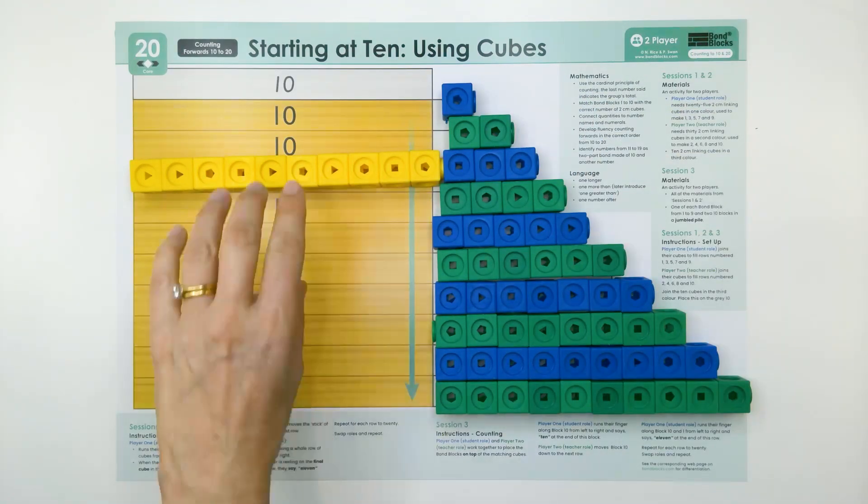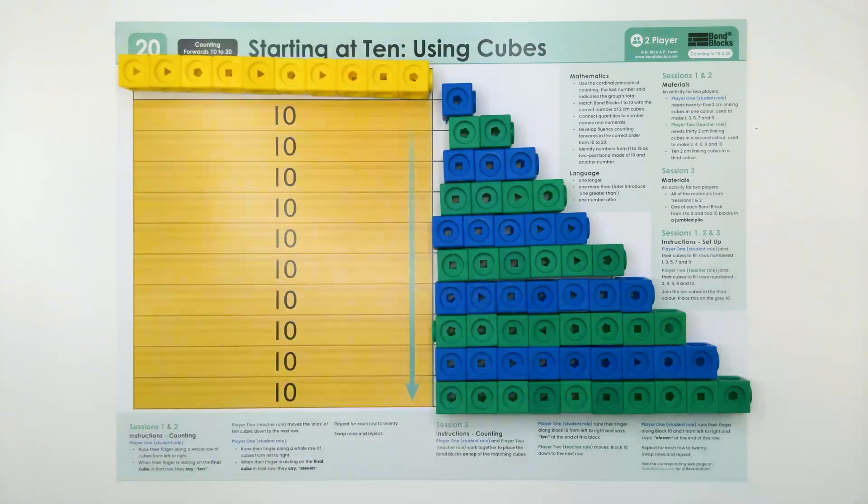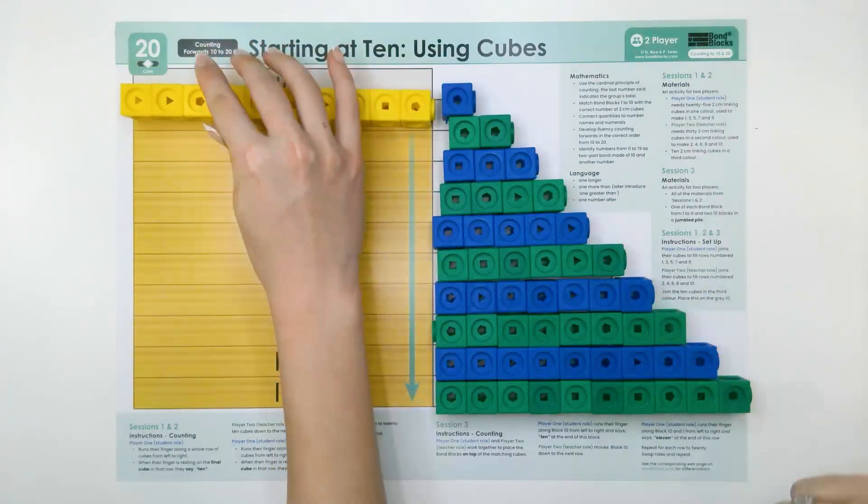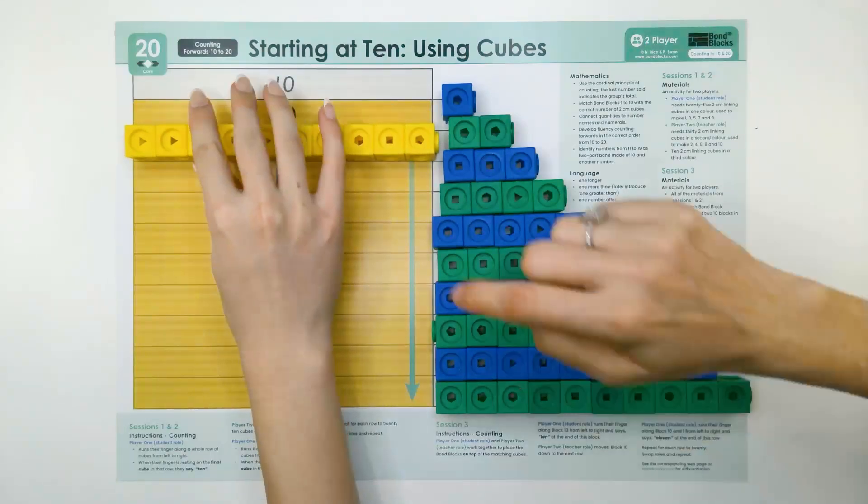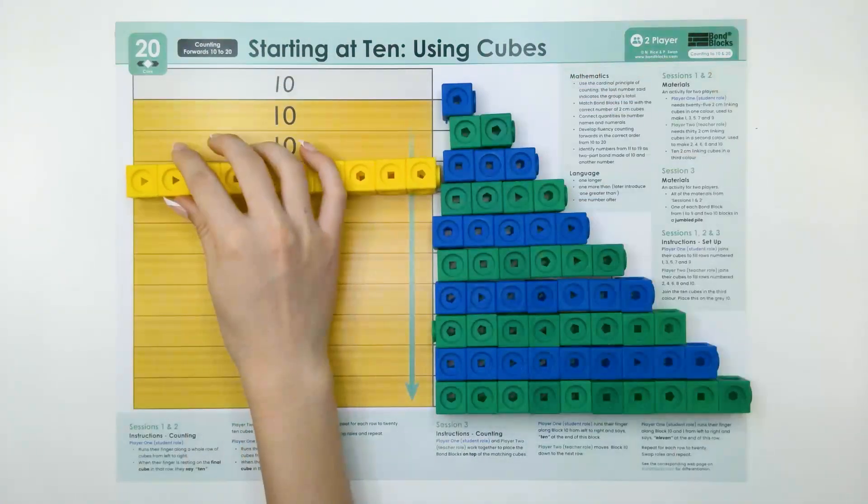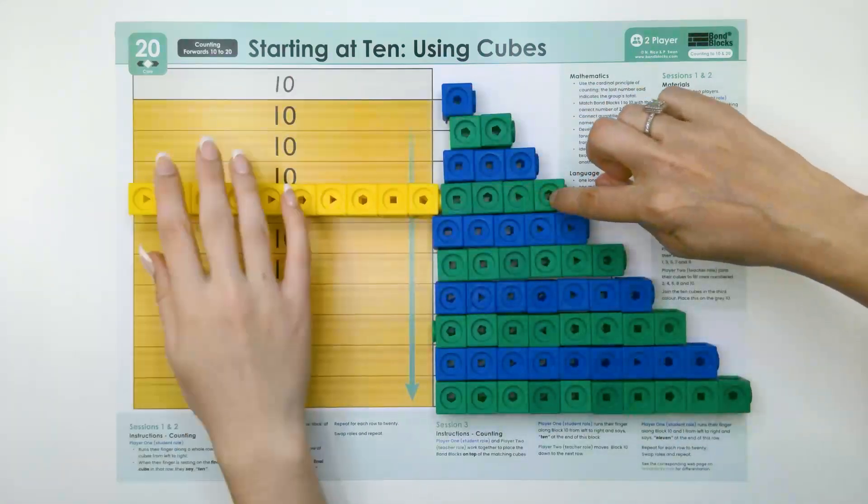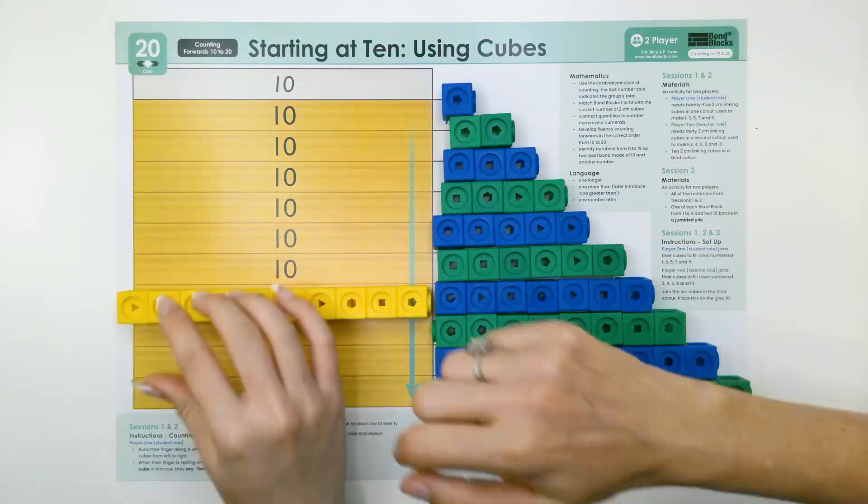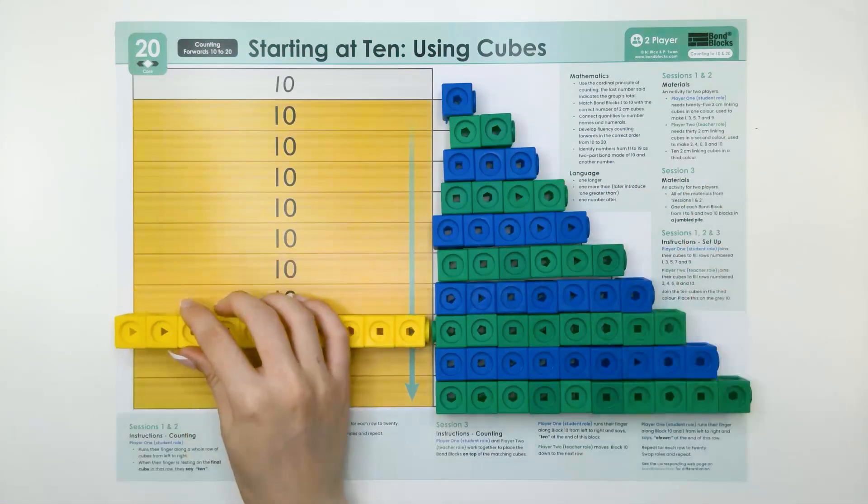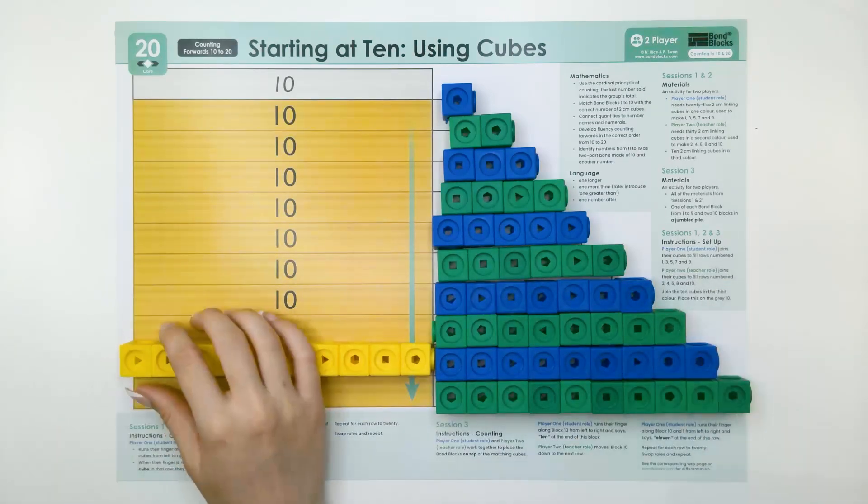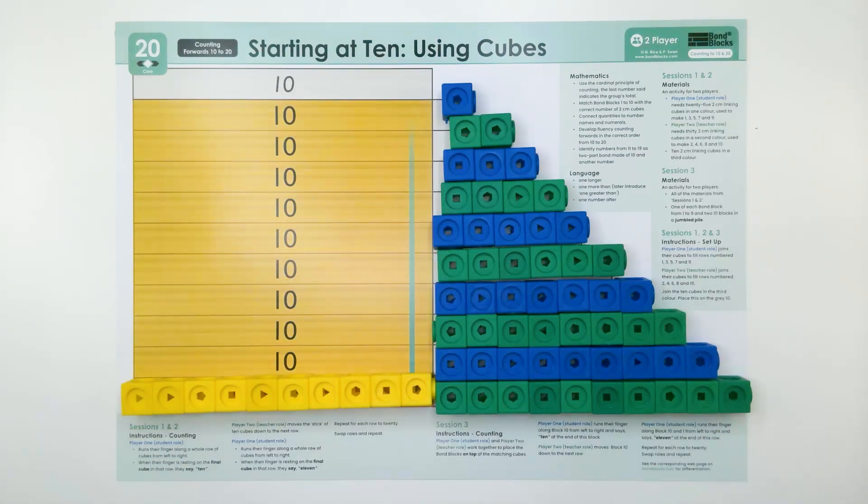Next we would swap rows. I'm going to count and you're going to move the ten down each row for me. 10. 11. 12. 13. 14. 15. 16. 17. 18. 19. 20. Well done.